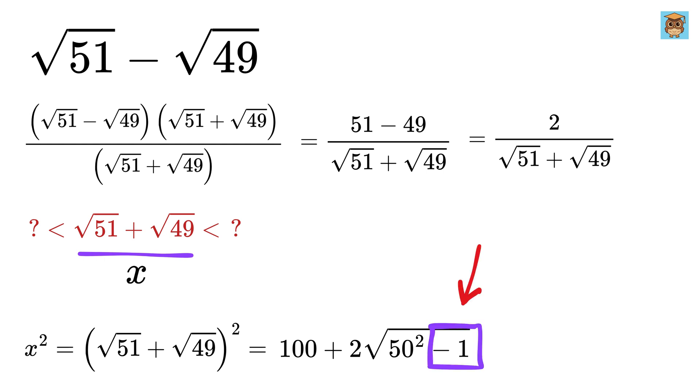Now how can we get rid of this minus 1? Notice that 50 square minus 1 will be less than 50 square. So x square will be less than 100 plus 2 multiplied by square root of 50 square.